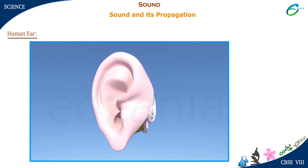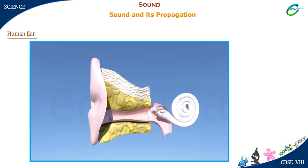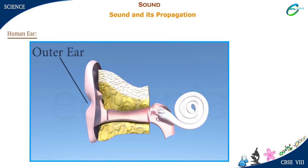The human ear consists of three parts. First is the outer ear, second is the middle ear, and third is the inner ear.